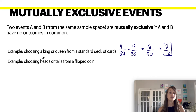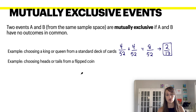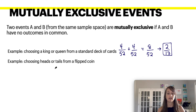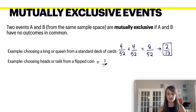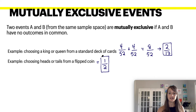Another example of a mutually exclusive event: choosing a heads or a tails from a flipped coin. You have two possibilities — heads or tails — and there are two possible choices. So you have a one out of two chance depending on what it is that you chose.